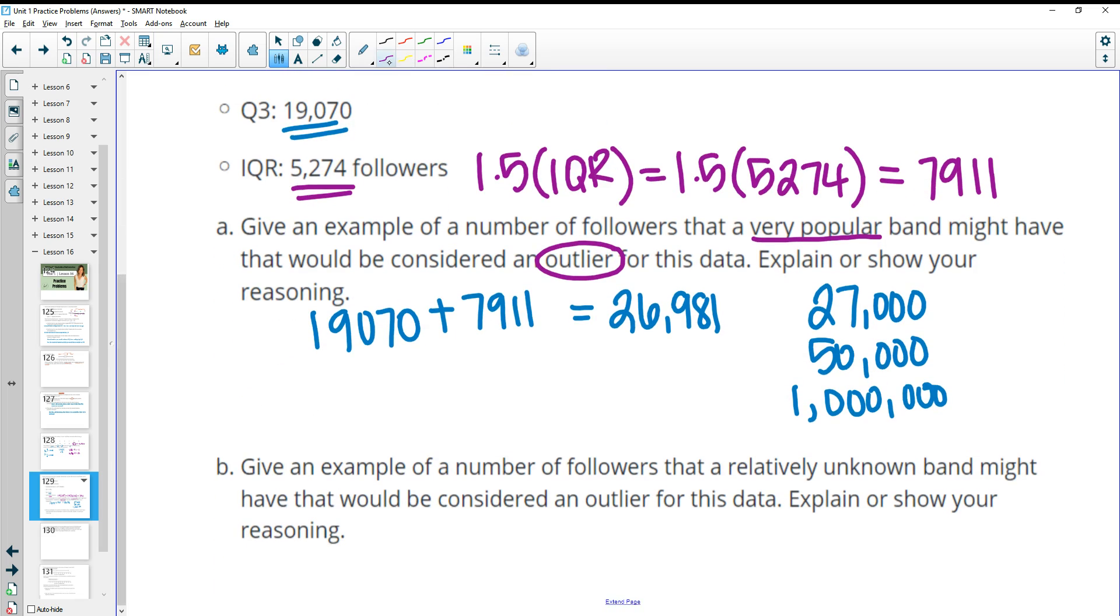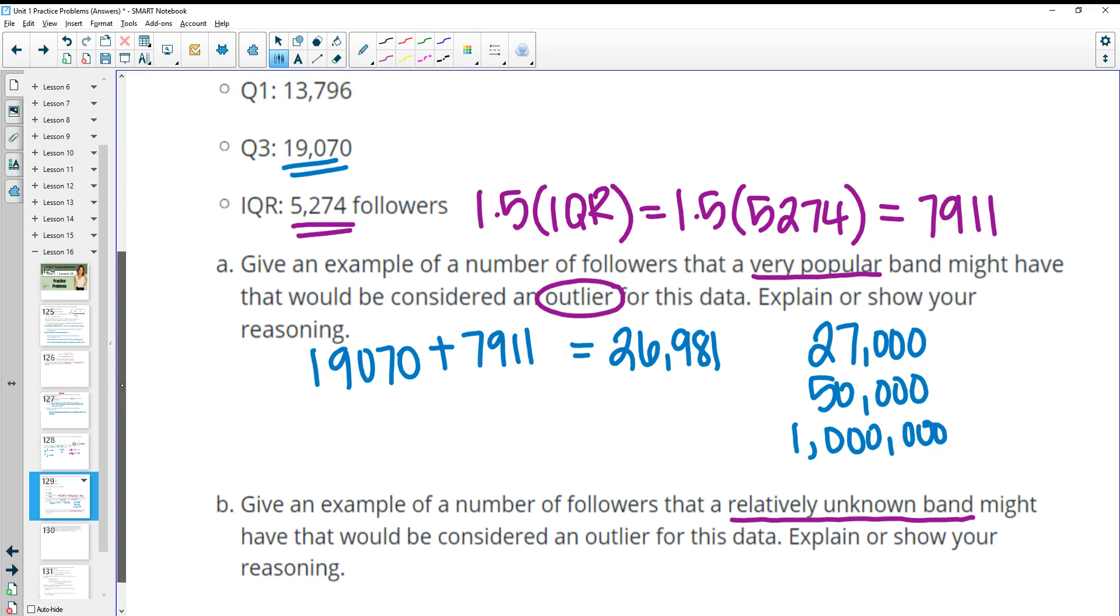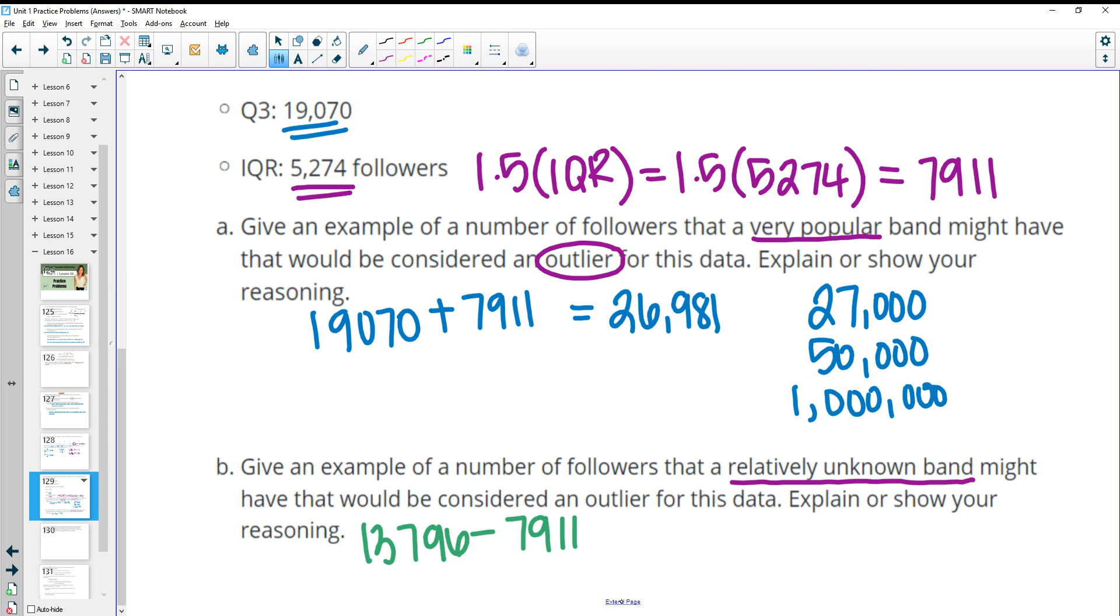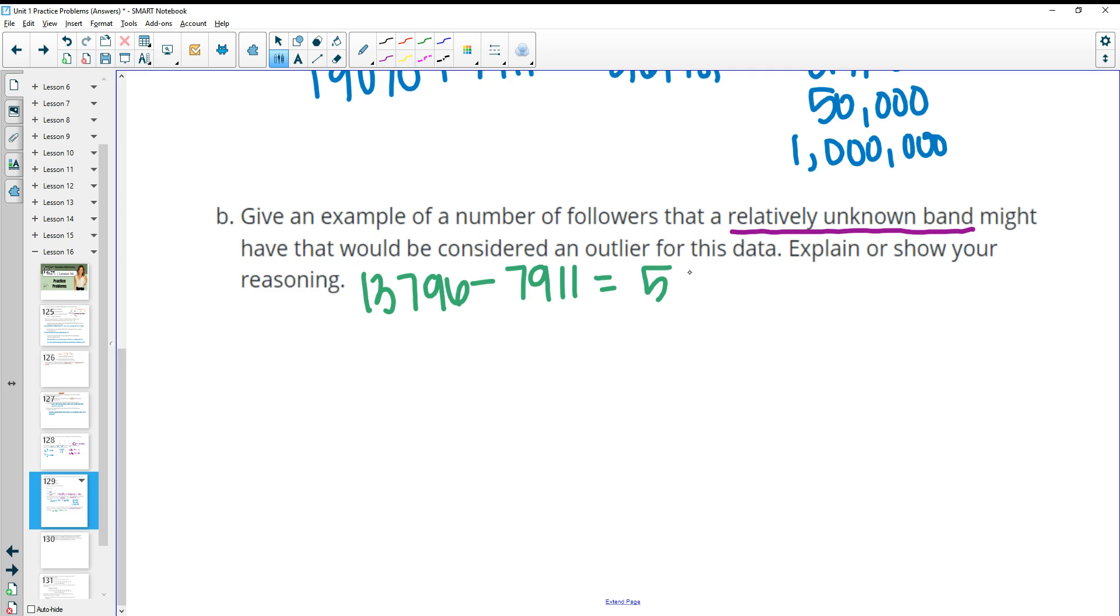Then part B says give an example of a number of followers of a relatively unknown band. So this would mean that they would be on the lower end of the followers. So this is going to be looking at Q1 and then subtracting 7,911. So our quartile 1 is 13,796. So we'll subtract those. And when you subtract that, you get 5,885. So anything less than that would be considered an outlier. Even 5,884, you could say 5,000, you could say 200. Anything less than 5,885 would be considered an outlier on the low end.